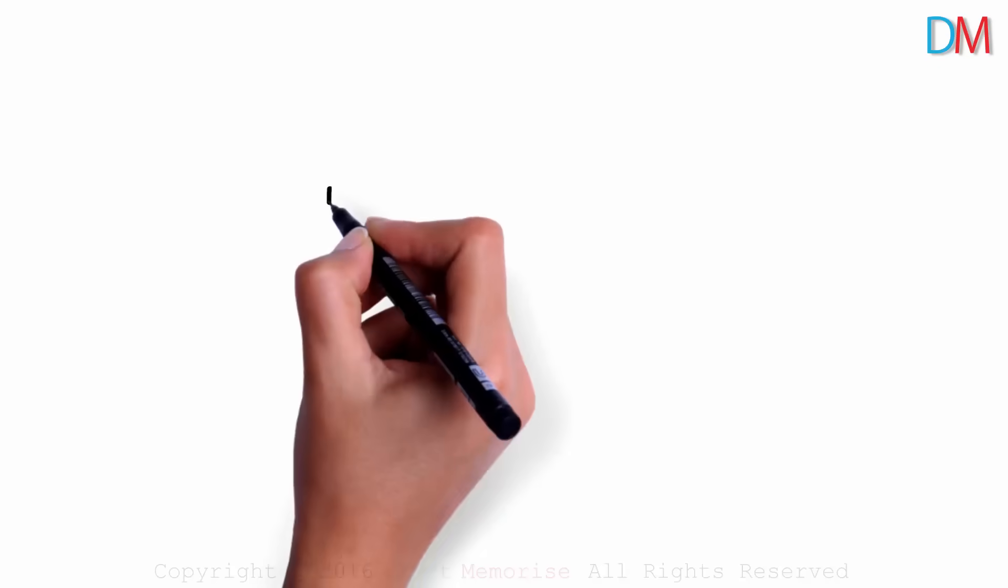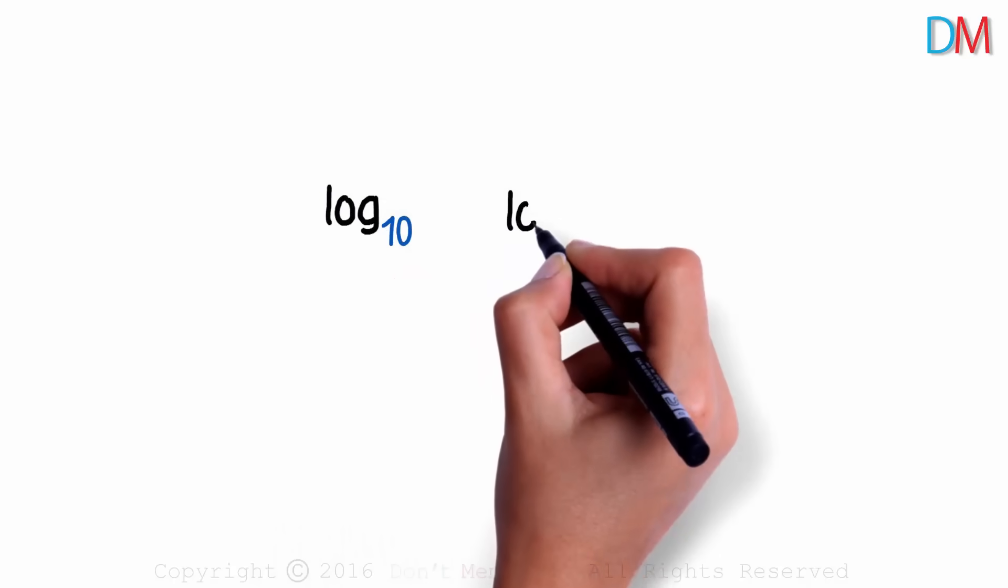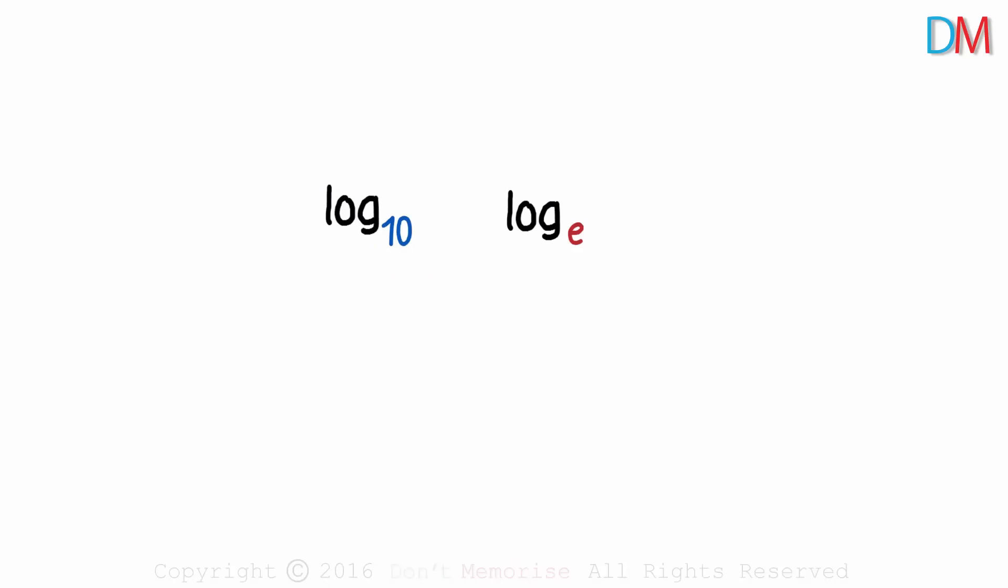What is E? The two most common logarithms used are log to the base 10 and log to the base E. Why are they the most commonly used logarithms? How do we really understand them?